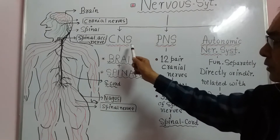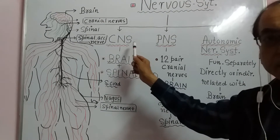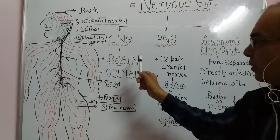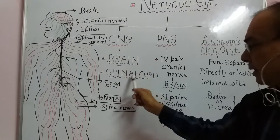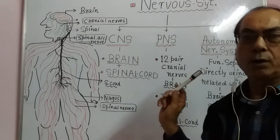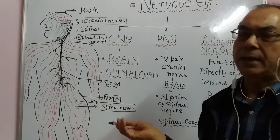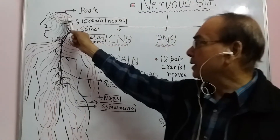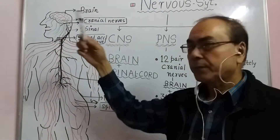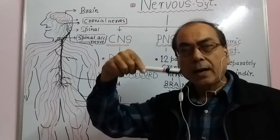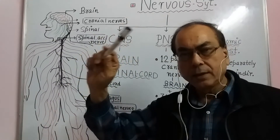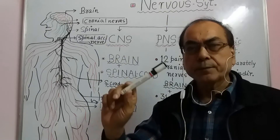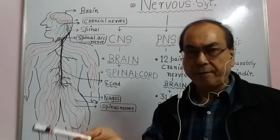Now please look — this is the Central Nervous System, which contains the brain and the spinal cord. When we talk about the brain first, the brain is located in the upper part of the skull, which is called the cranium or the cranial cavity.